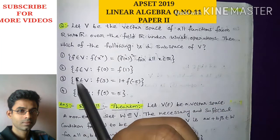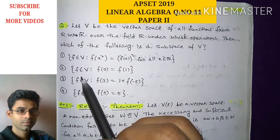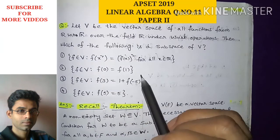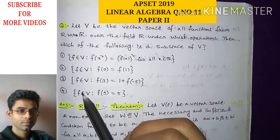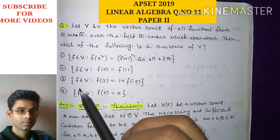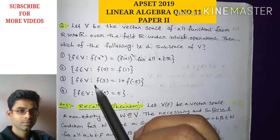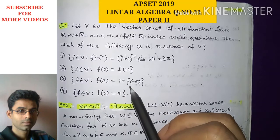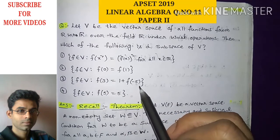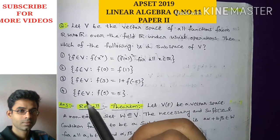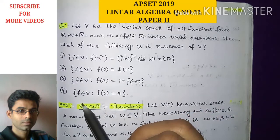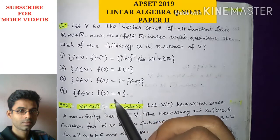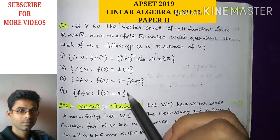Option number two: set of all f belonging to V such that f(0) = f(1). Option number three: set of all f belonging to V such that f(3) = 1 + f(−5). And option number four: set of all f belonging to V such that f(5) = 5.